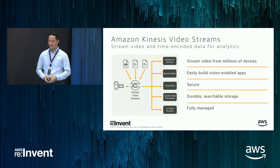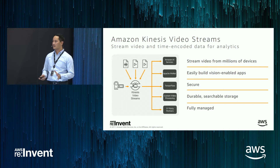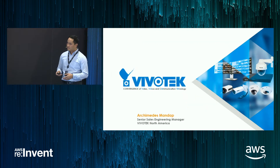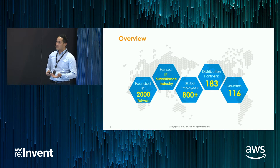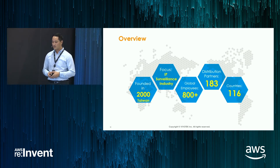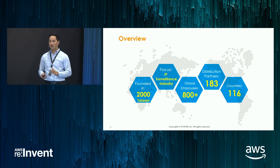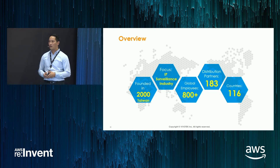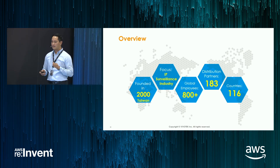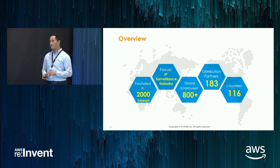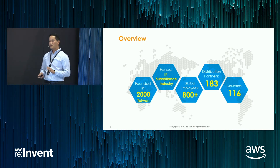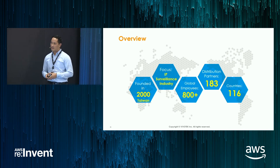My name is Archimedes Mandap and we're very excited to demo our Kinesis-enabled camera. But before we jump into that, I want to talk a little bit about Vivotech. Vivotech is a company founded in 2000, with our global headquarters in New Taipei City, Taiwan. A lot of you have probably never heard of us because we've primarily engaged in the IP surveillance industry.